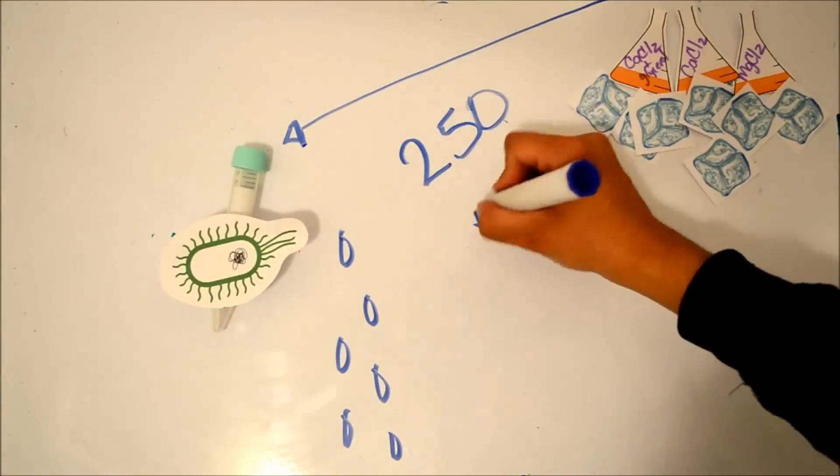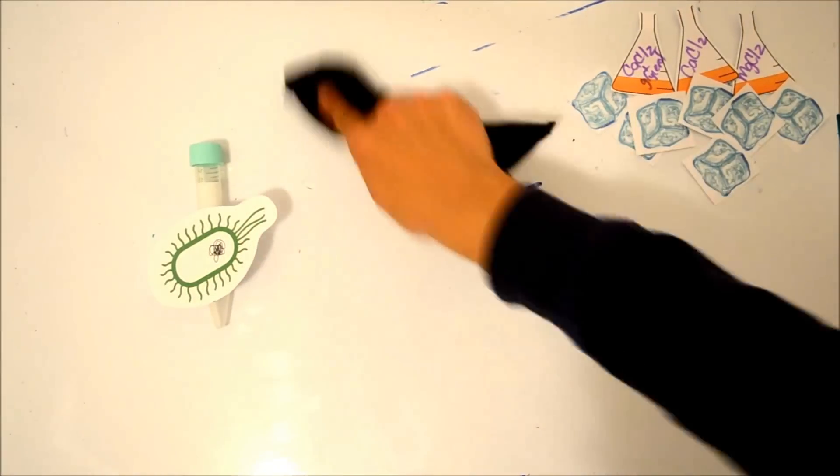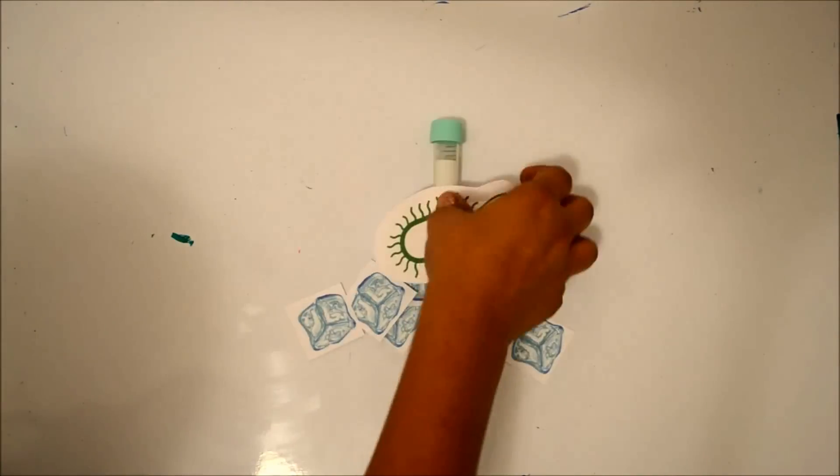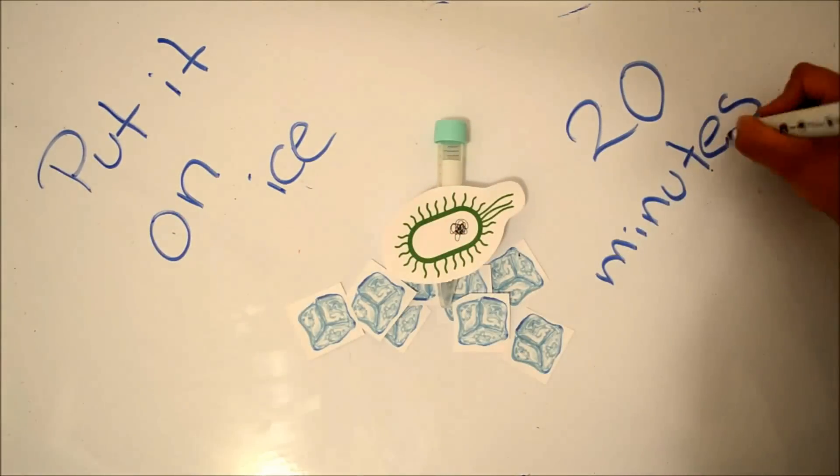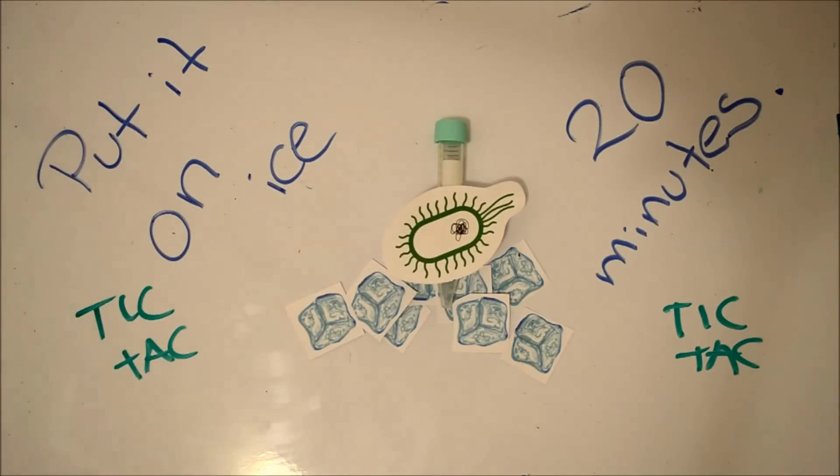Decant the supernatant. Resuspend gently in 250 ml of calcium chloride with glycerol solution. Incubate on ice for 20 minutes.